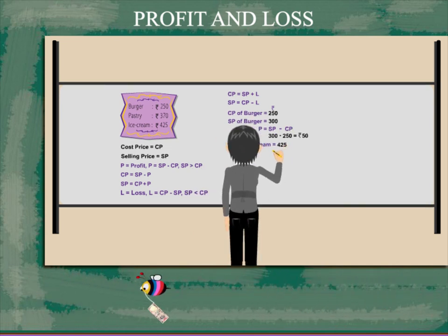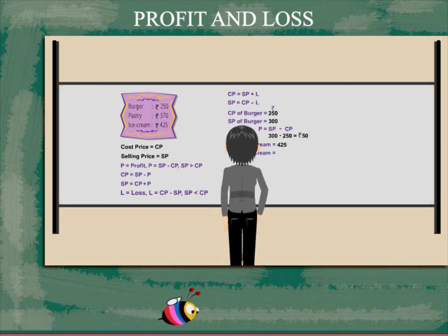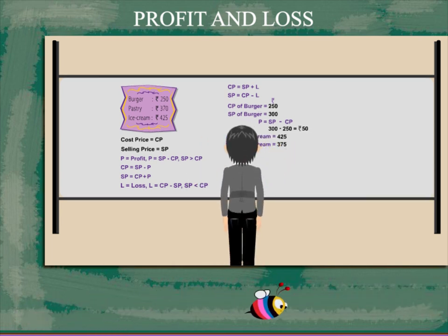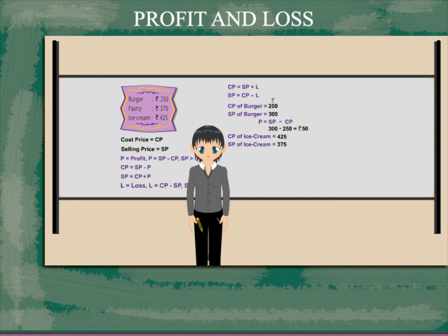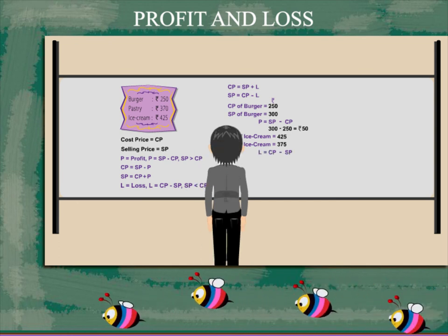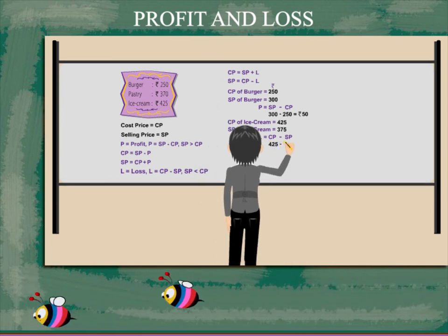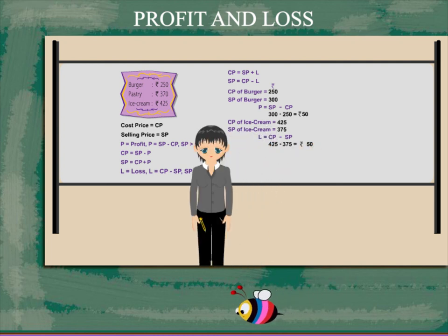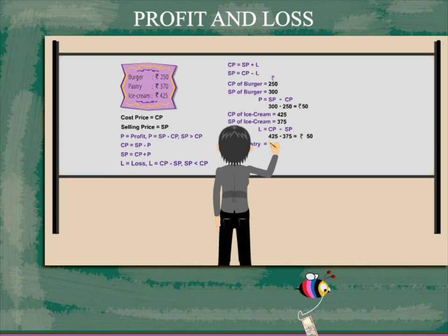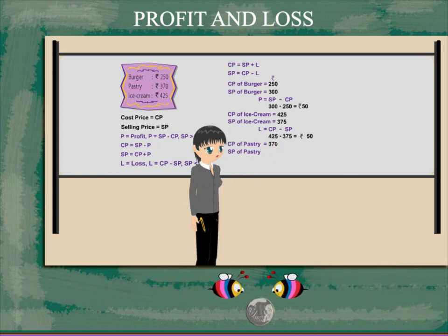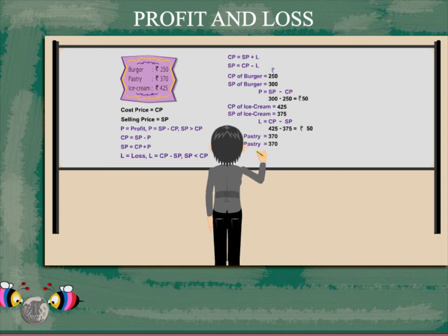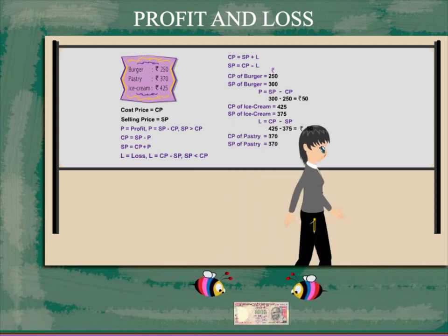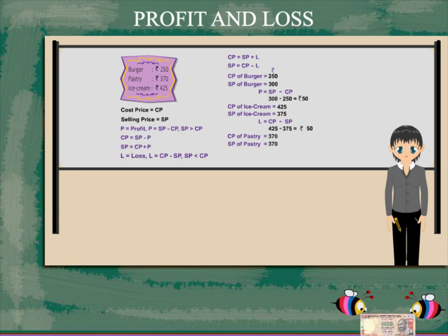CP of pastry is rupees 370 and SP is also rupees 370, so there is no profit and no loss.